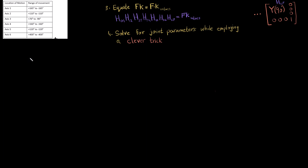This is the third part in our video series on doing the inverse kinematics of a six degree of freedom industrial robot. In the first two parts we derived the forward kinematics. I talked about the four steps needed and we got to the third step, where on the right hand side we have a matrix of numbers, and on the left hand side we have homogeneous transforms containing the joint parameters from theta one all the way through theta six.